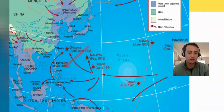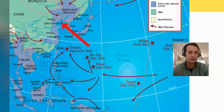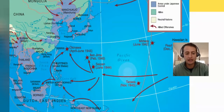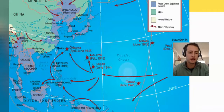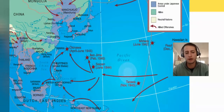Everything that's purple on the map is under Japanese control. That includes the Philippines, which you can see was controlled by the United States, as well as areas of China. There are also other areas that were controlled by Allied powers like Britain but are now under the control of Japan. This is going to be a big deciding factor on whether the United States is going to pursue the atomic bomb.